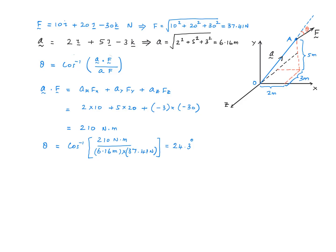Theta equals cosine inverse of 210 N·m divided by 6.16 meters, which is little a, times 37.41 N, which is F. You can see the units cancel out the way they're supposed to. We have N in the numerator and N in the denominator. The angle is calculated to be 24.3 degrees.